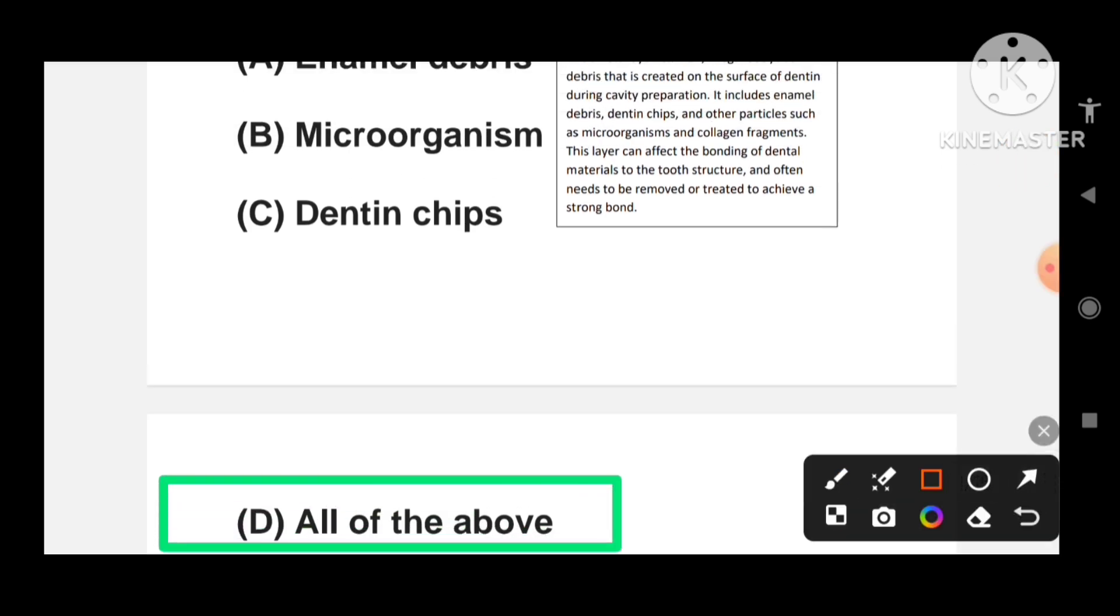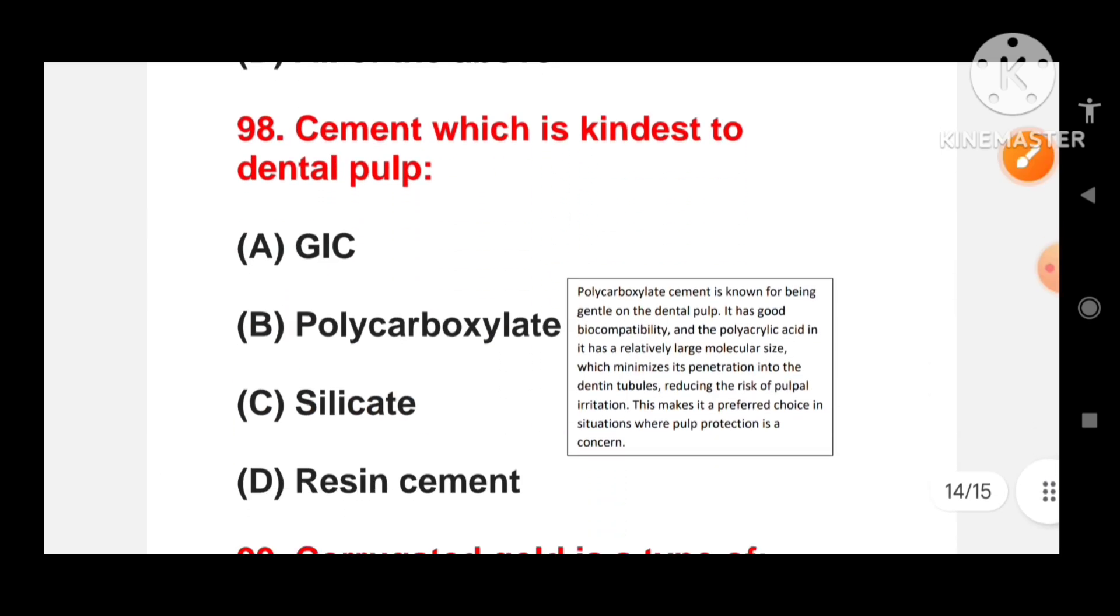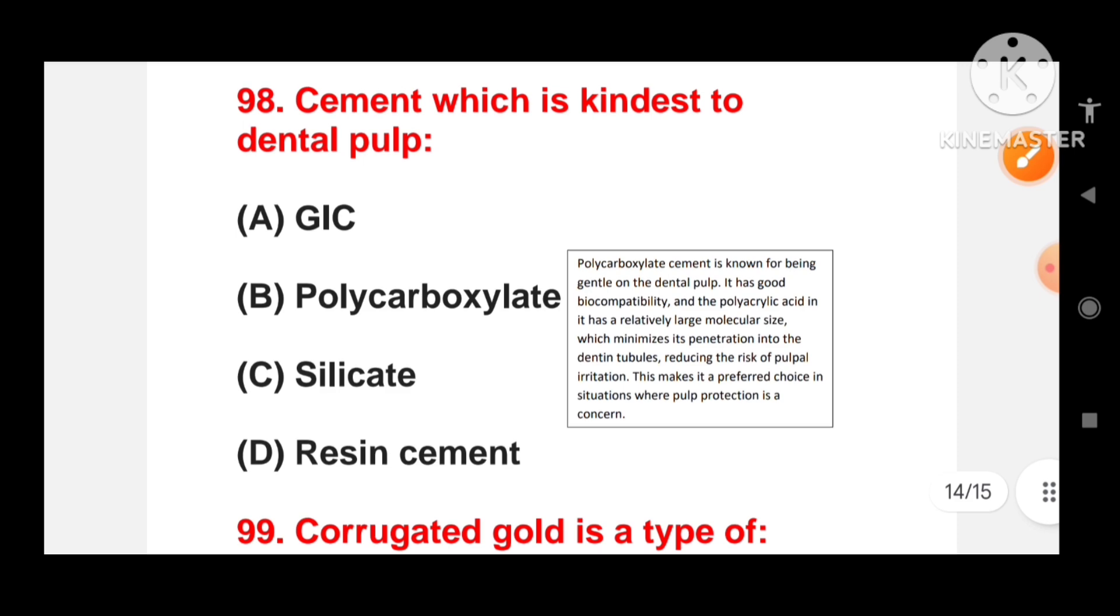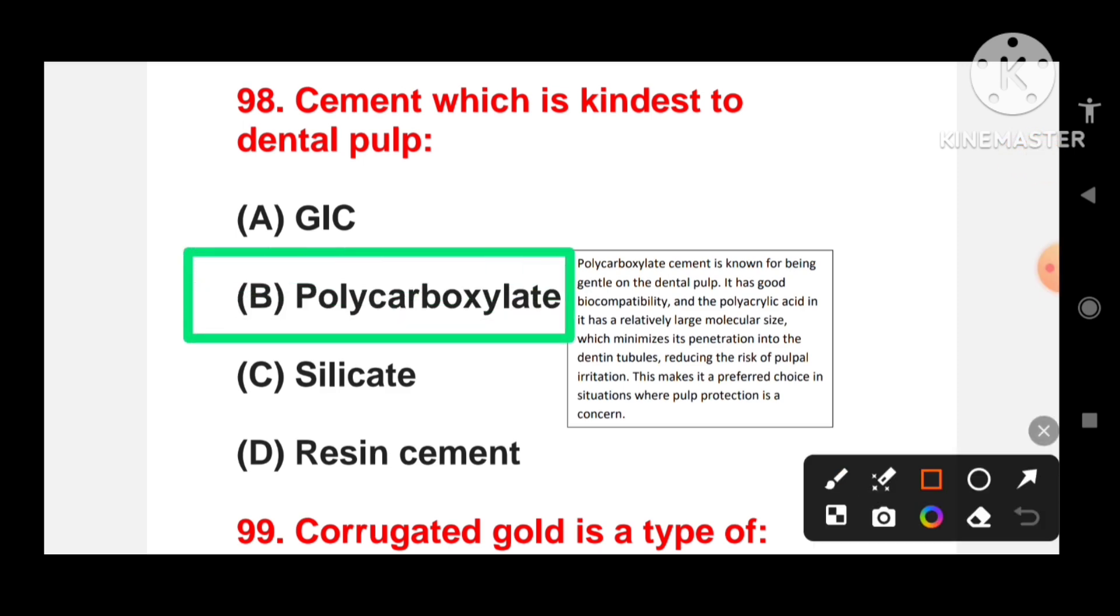Cement which is kindest to dental pulp? The correct answer for this question is polycarboxylate cement. Polycarboxylate cement is known for being gentle on the dental pulp and it has good biocompatibility. The polyacrylic acid in it has a relatively large molecular size which minimizes its penetration into the dentinal tubules and reduces the risk of pulp irritation. This makes it a preferred choice in situations where pulp protection is concerned.